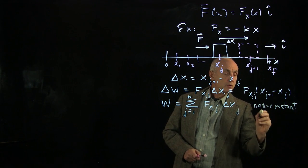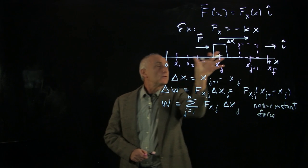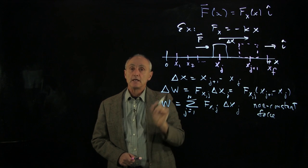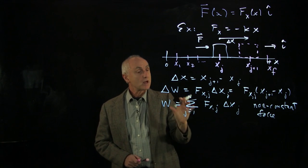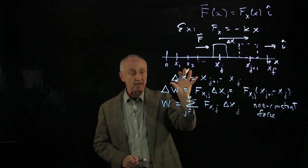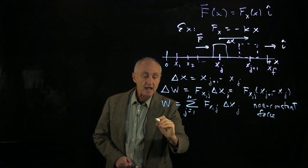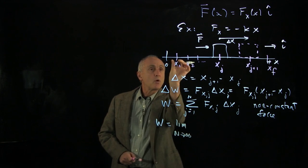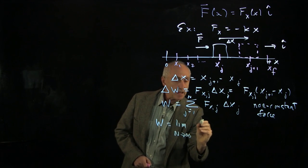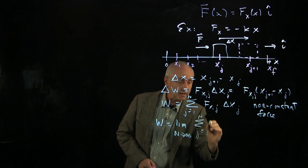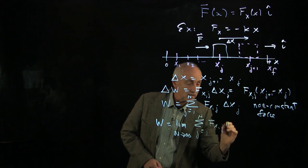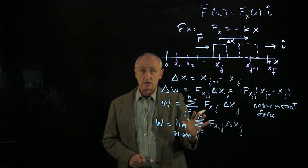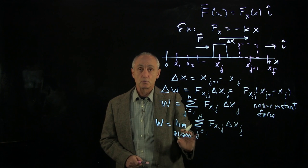The issue here is about how fine we cut this interval into n individual pieces. If we want to ask what is the limit as n goes to infinity, that's what we need to consider. We're making smaller and smaller displacements, and we're taking this sum from j=1 to n of F(x_j)·Δx_j.